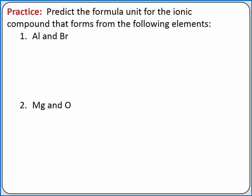Let's practice by predicting the formula unit for the ionic compound that forms between a metal and a nonmetal. We'll start with aluminum and bromine. From the periodic table, aluminum forms a 3+ ion because it needs to give away three electrons to have the same electron configuration as neon. Bromine forms a 1- ion because it needs one additional electron to have the same electron configuration as krypton.